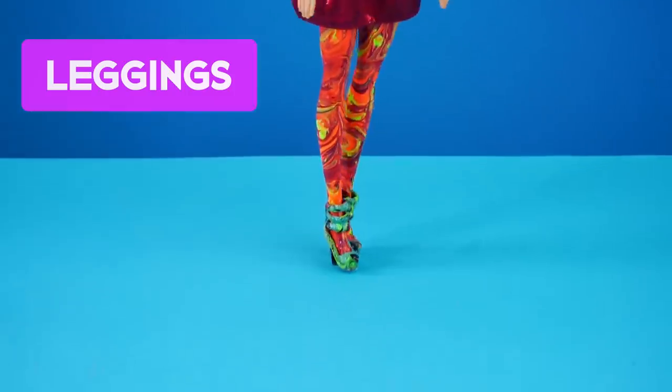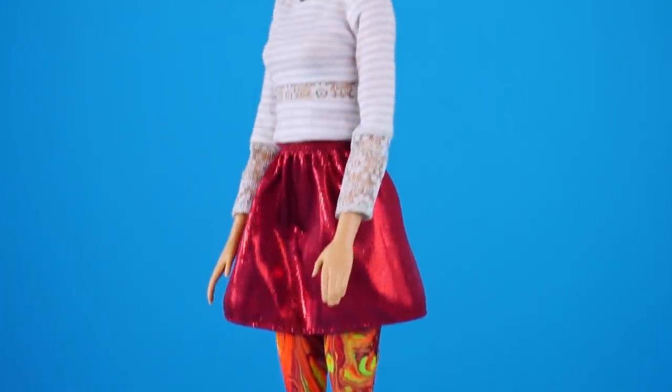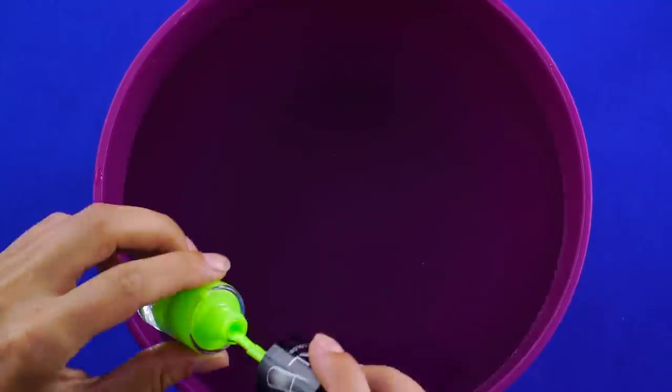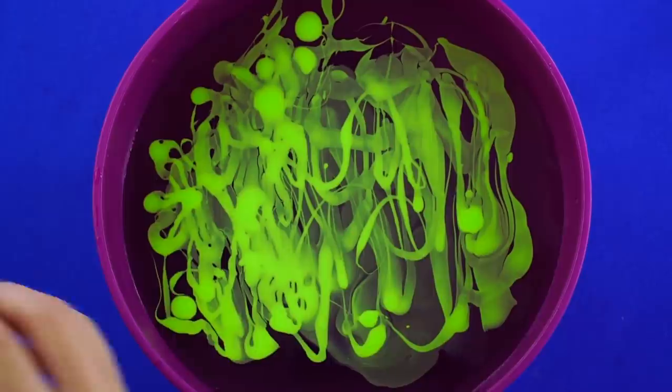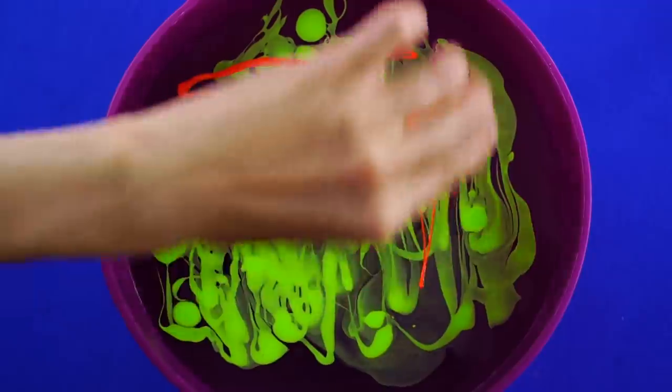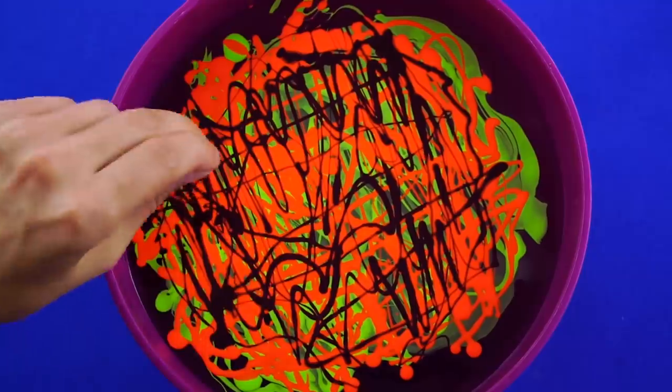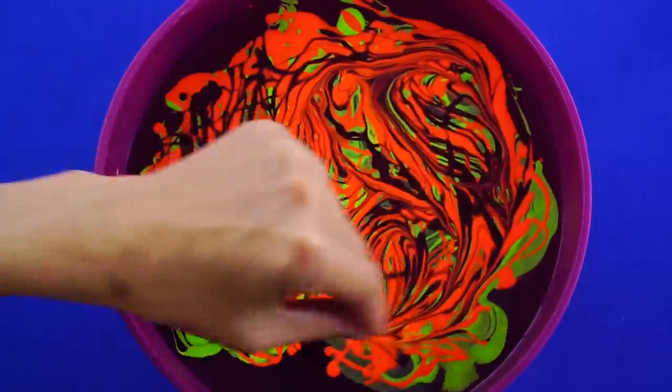Leggings. If you want to add a little flair to Barbie's outfit with some colorful leggings, give this a try. Use the same method as before and drizzle nail polish into a bowl of water. Use your favorite colors to match Barbie's outfit. The trick is to create a layered effect with the nail polish. Swirl it around with a toothpick.